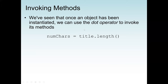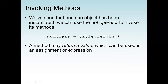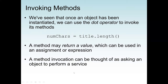We are assigning the length to a variable called numChars, which we declare as int, because the length method returns a whole number. A method may return a value that can be used in an assignment or an expression. In this case, we use it in an assignment — we assign the returned value, which is the number of characters in the title object, to numChars. We can also use this expression in a formula. A method invocation can be thought of as asking an object to perform a service.